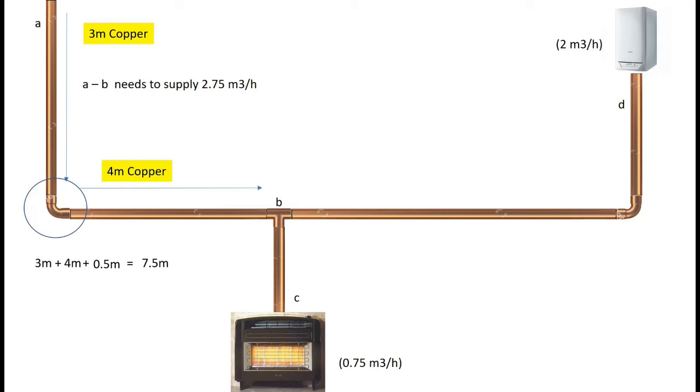Just take my word for it. All you do is you multiply the length of the pipe that you've got by the amount of appliances on the system. In this case, you multiply the length by 2. 7.5 times 2 is 15 meters.